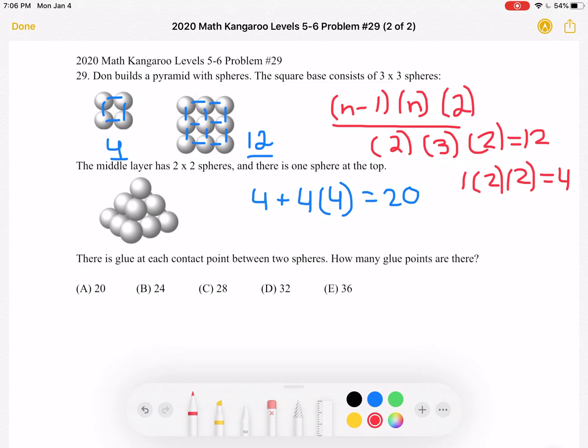Okay, so now let's add up our total number of contact points. We have the 4 plus 12, 16 horizontal plus 20 vertical. We have 36 total glue points, which is answer choice E.